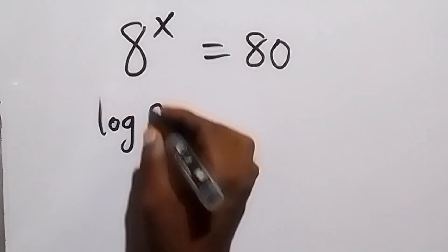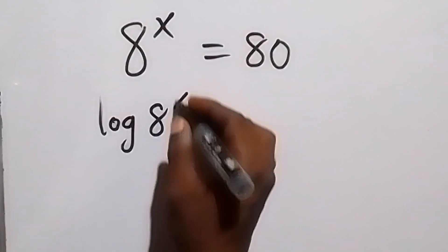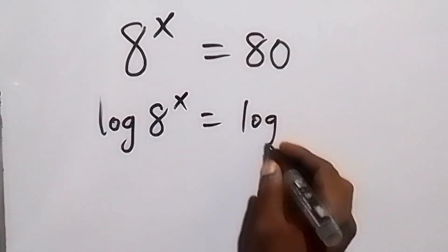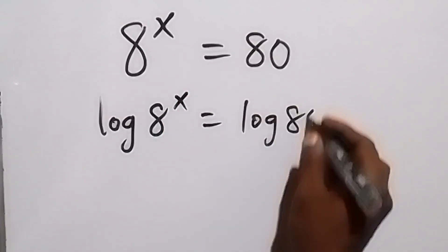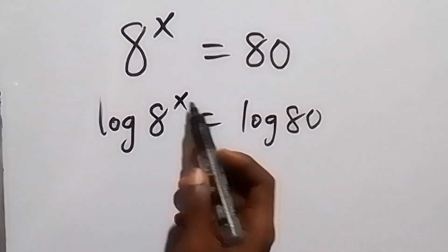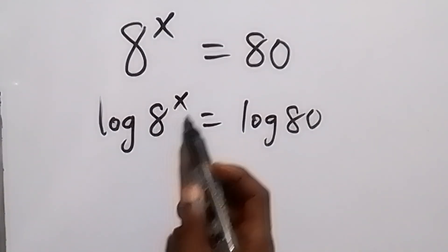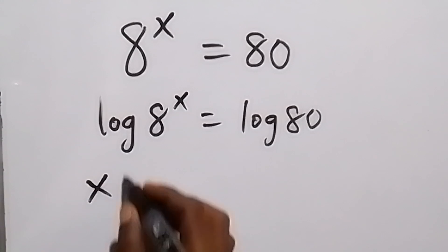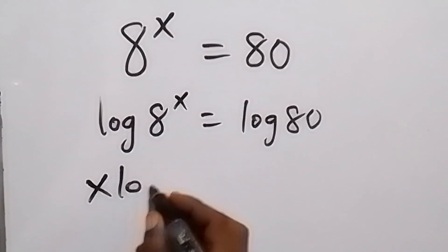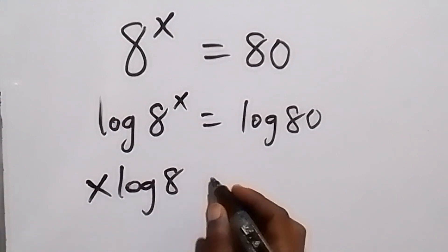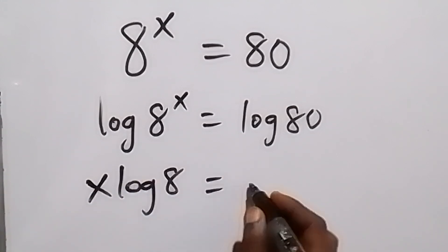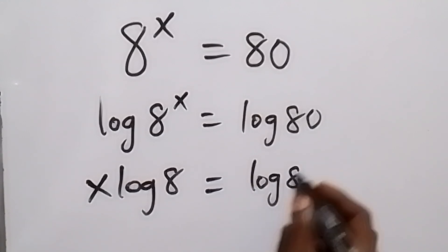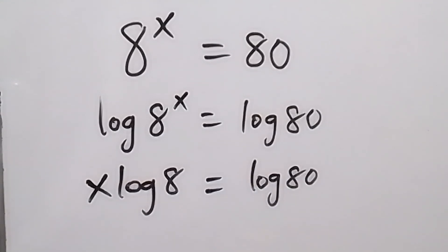We have log of 8 raised to the power x equals log 80. Applying the law of logarithms, the exponent x can come to the front, giving us x times log 8 equals log 80.